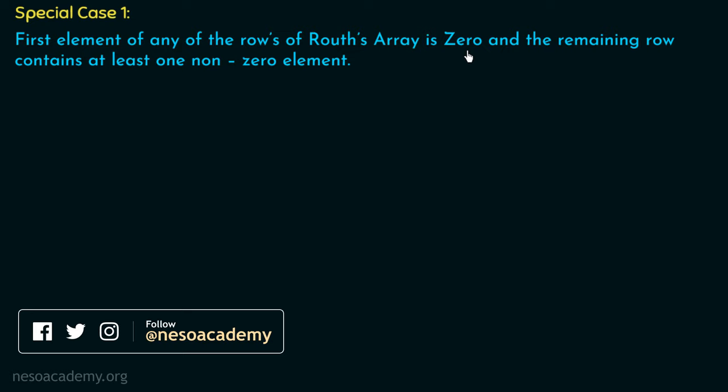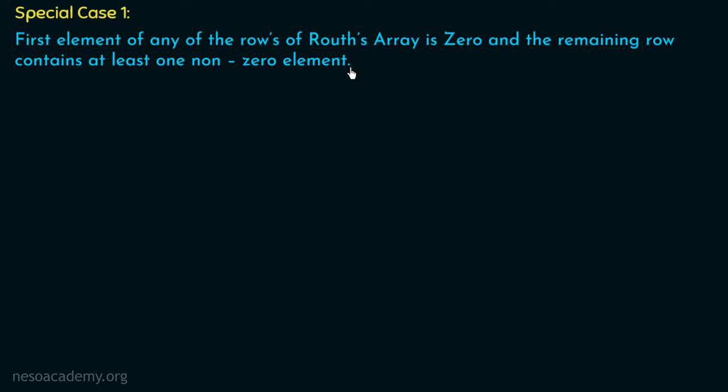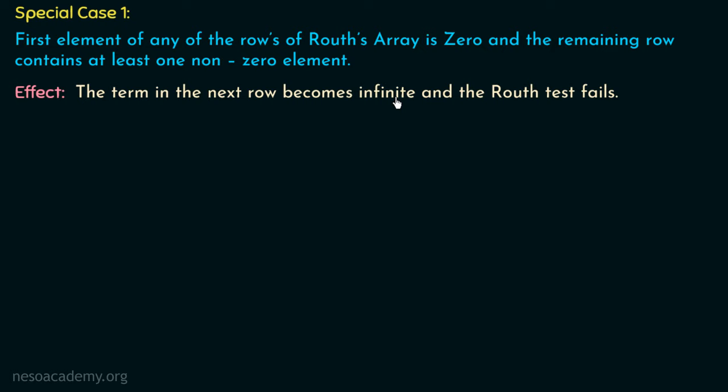Special Case 1 of RH criteria refers to a situation when the first element of any of the rows of Routh's array is 0 and the remaining row contains at least one non-zero element. During the formation of Routh's array, when any element in the first column is 0 and the remaining row contains at least one non-zero element, this becomes a special case. The effect is that the term in the next row becomes infinite and the Routh test fails.